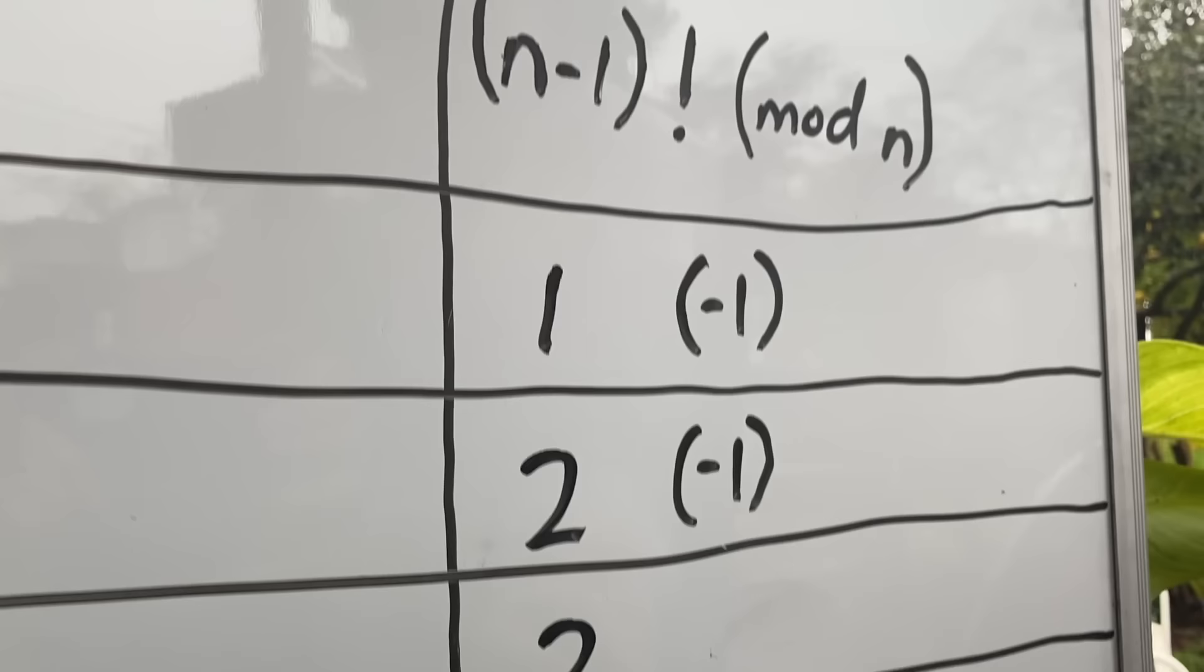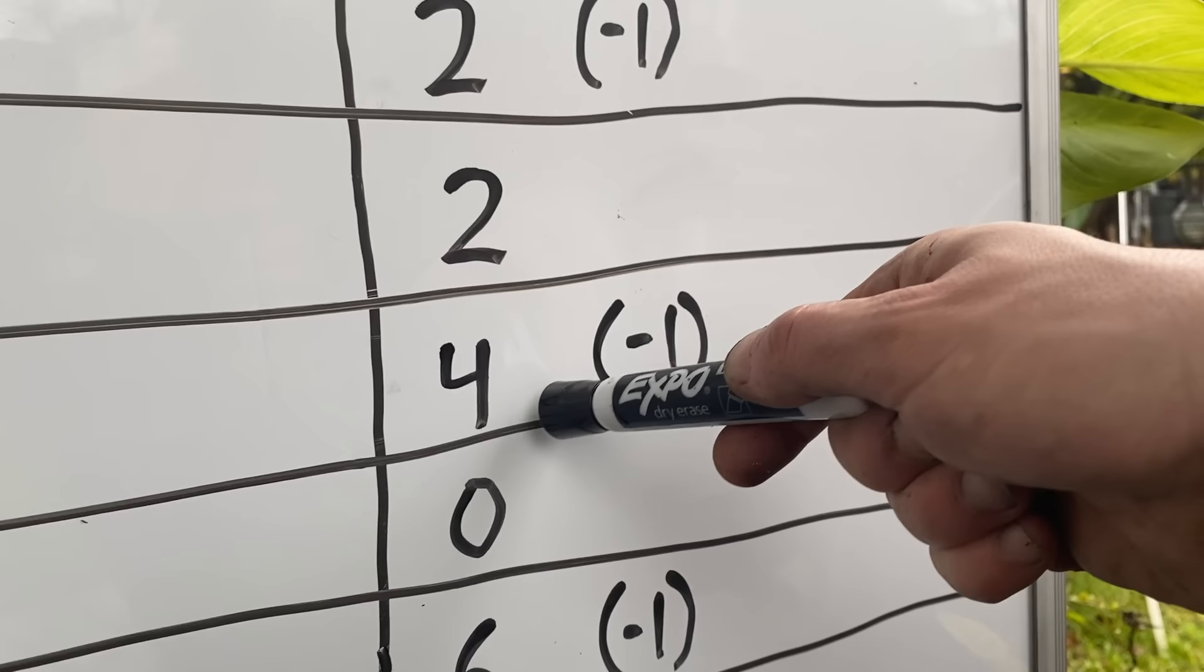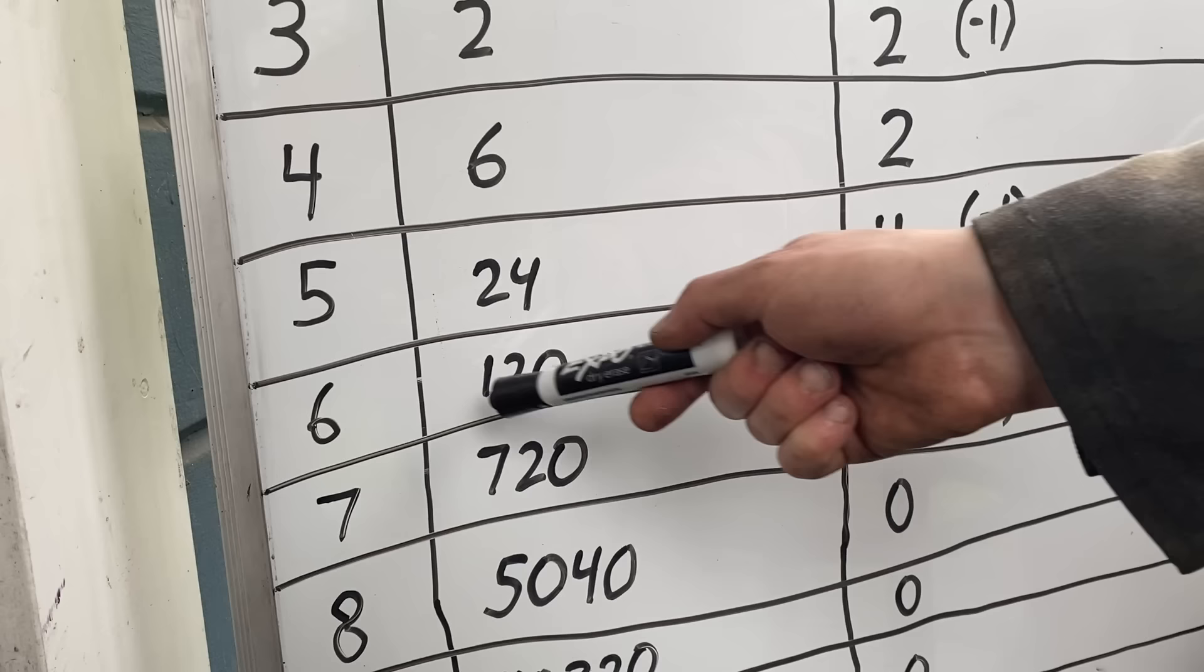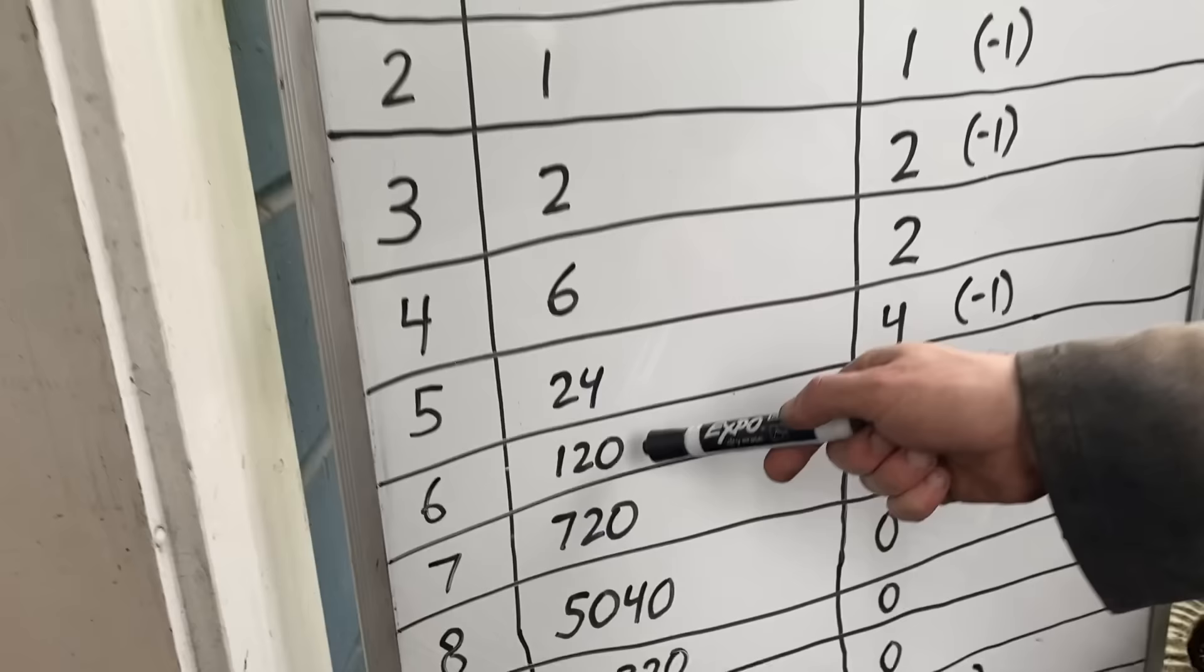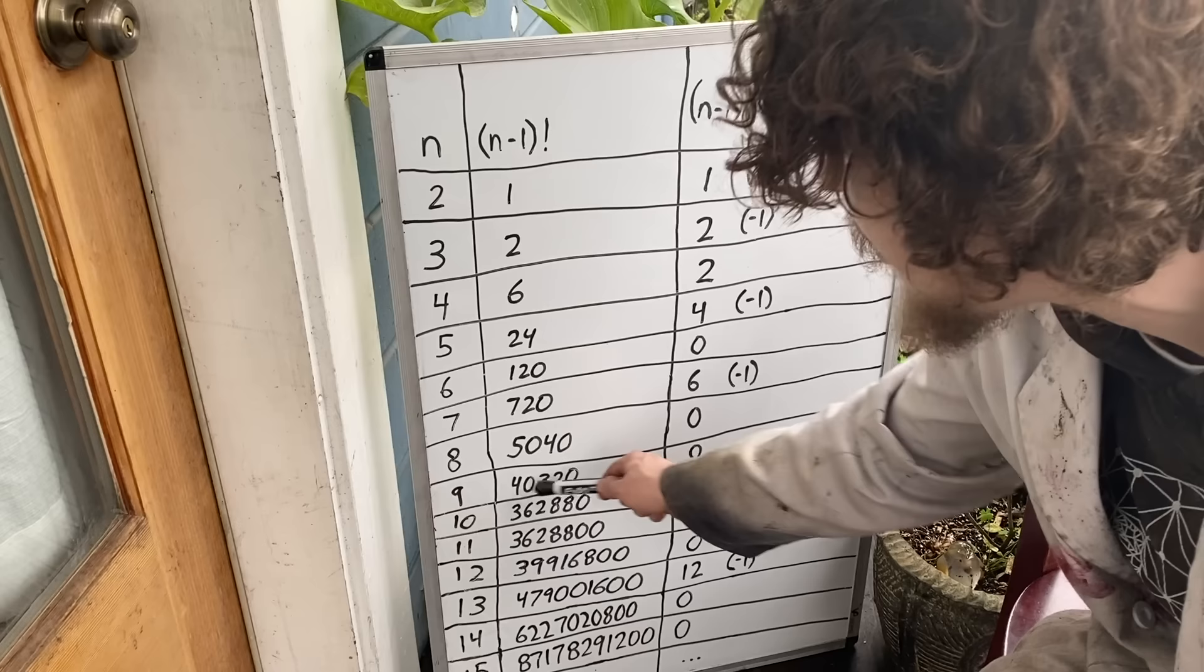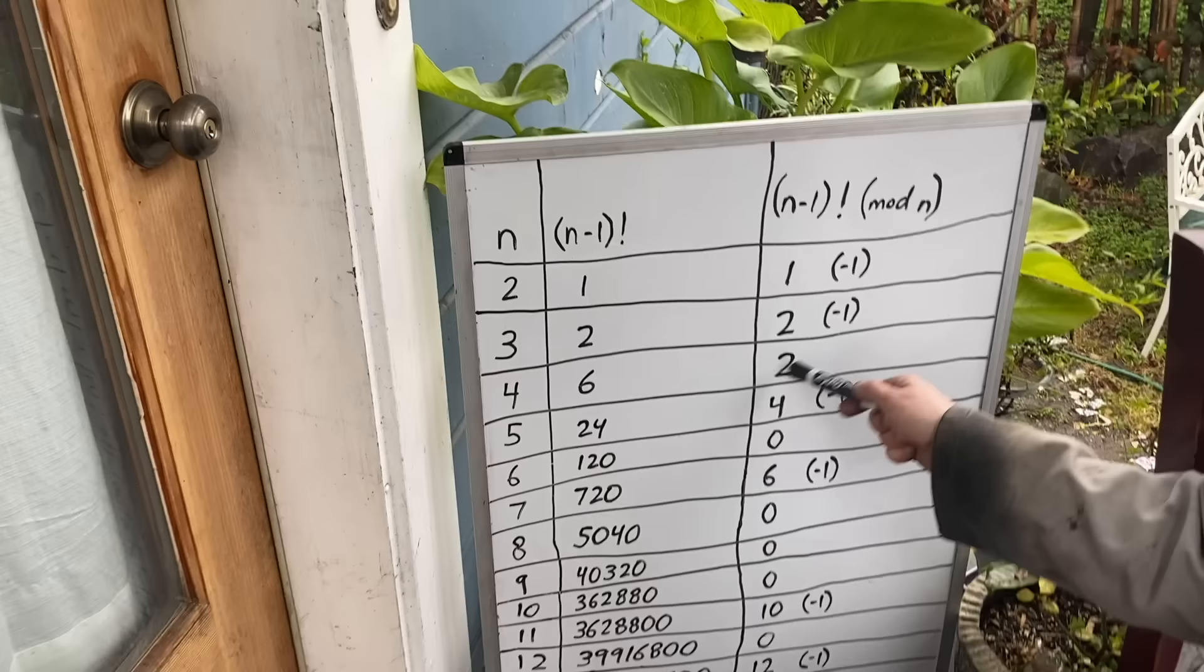And here that factorial is in the mod of the original number. Like 24 in mod 5 is 4, also known as negative 1 in that mod. Or 5 factorial in mod 6 is 0, meaning that if we spun that many hours on that clock we would end up back at the top, and also meaning that that factorial is divisible by the number. And so we can notice here that all the composites seem to end up at 0 for any composite number, except for 4 which stands out.